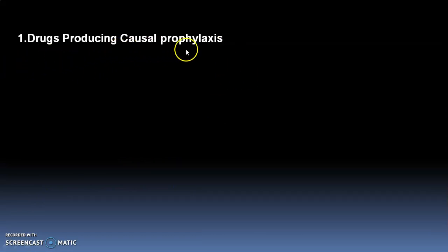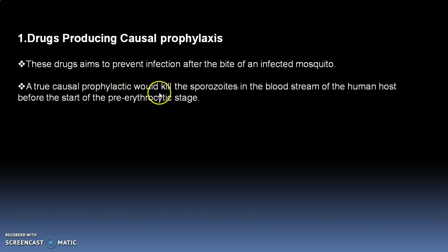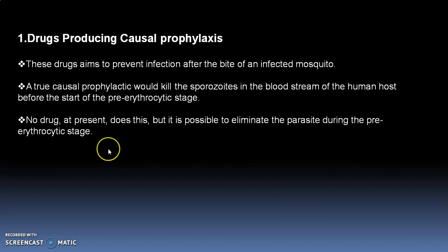Drugs producing causal prophylaxis aim to prevent infection after the bite of an infected mosquito. A true causal prophylactic drug will kill the sporozoites in the bloodstream of the human host before they start the pre-erythrocytic stage. This prophylactic drug kills the sporozoites before they go into the pre-erythrocytic stage, thus eliminating the parasite during the pre-erythrocytic stage.